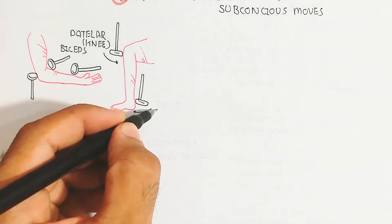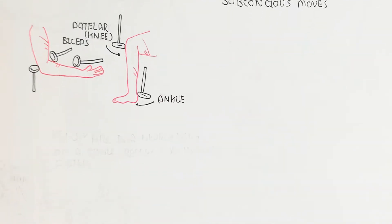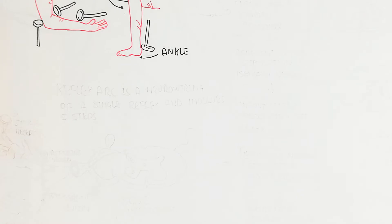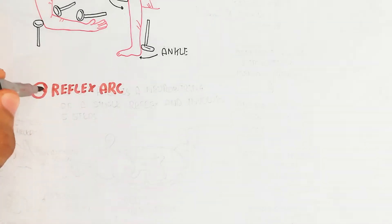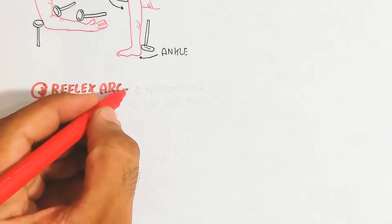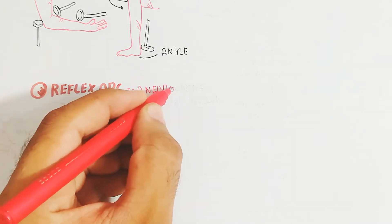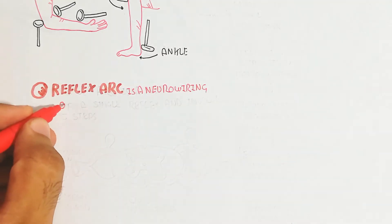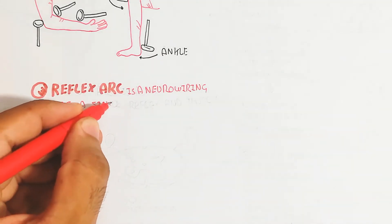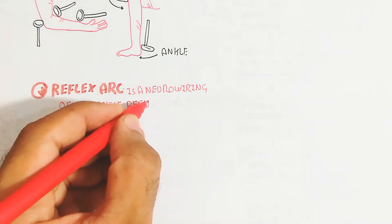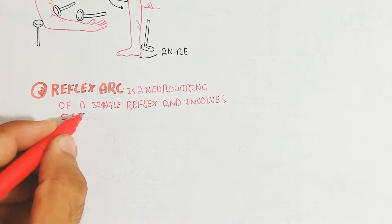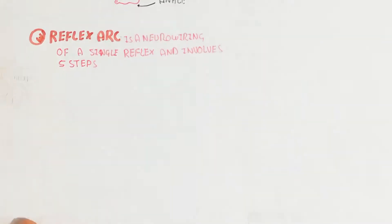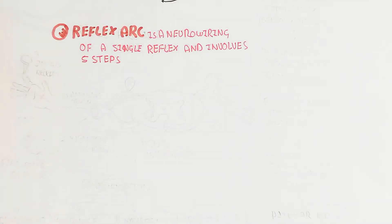For example, a stimulus at the knee will lead to a jerk of the ankle, which will then lead to curling the toes of the feet. The reflex arc is essentially the neural wiring — the wiring of the nervous system — for a single reflex, and it involves five steps.